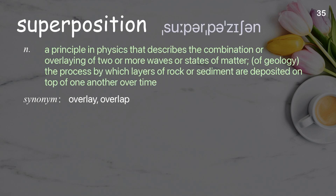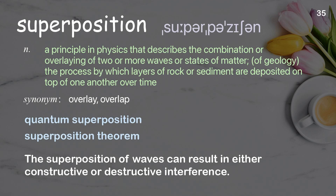Superposition: A principle in physics that describes the combination or overlaying of two or more waves or states of matter. In geology, the process by which layers of rock or sediment are deposited on top of one another over time. Examples: Quantum superposition, superposition theorem. The superposition of waves can result in either constructive or destructive interference.